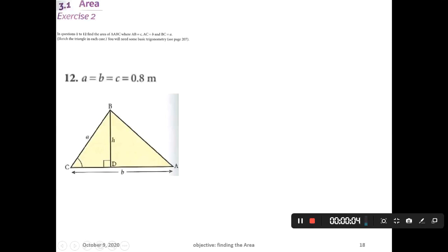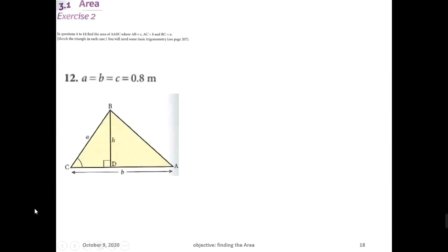We learned throughout five or six videos posted last week about finding the area of triangles. We learned that the general formula for finding the area of a triangle is equal to half times base times the perpendicular height on that base.